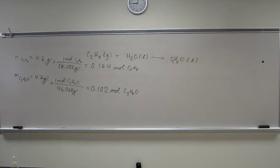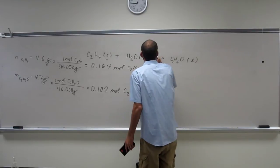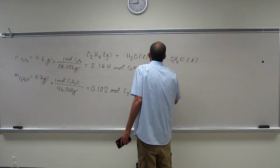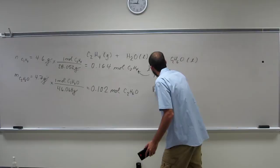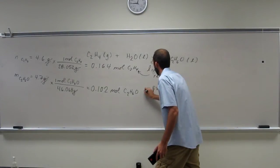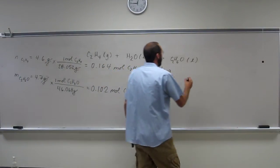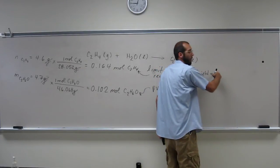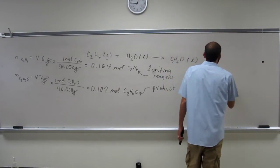So now we're comparing the limiting reagent with the product. We figured out what the percent yield is. Is everybody okay with that? So figure out the percent yield. It's going to be the number of moles of product divided by the number of moles of limiting reagent.